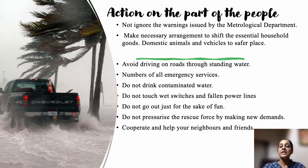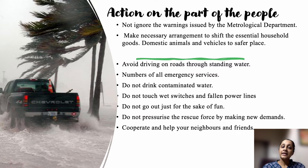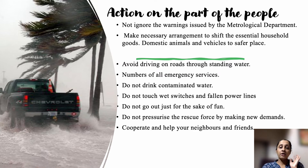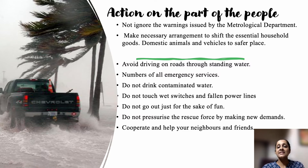During a cyclone, drinking water and water bodies get contaminated, so we should not drink from them. We should not touch wet switches or fallen power lines, as impure water is a good conductor of electricity and touching faulty power lines can cause electric shock. People should not visit affected areas out of curiosity, as it is very dangerous. People should also not pressurize rescue forces with unnecessary demands, as rescue teams have many lives to save and need full cooperation.